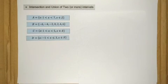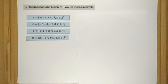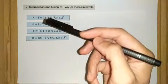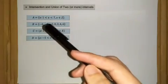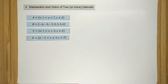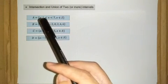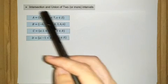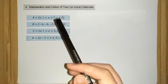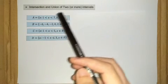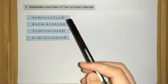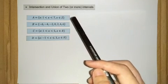Welcome back, let's have some fun with these examples. We're still discussing the intersection and union of two or more intervals. We have four sets or intervals: A, B, C, and D. Set A is any number x that takes a value from one to seven, but does not include one and seven, and x is an element of Z, the integers — not real numbers, just integers.